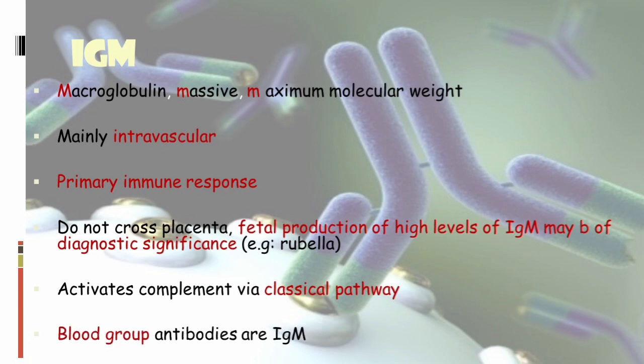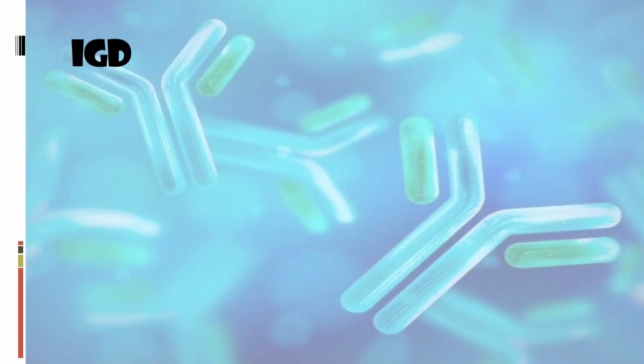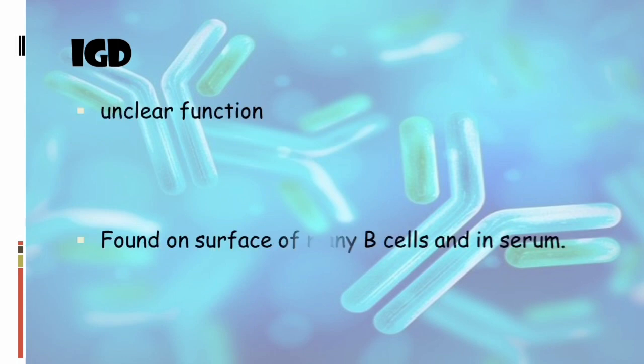Blood group antibodies are IgM. Next is IgD — its function is not entirely clear, and it is found on the surfaces of many B cells and also in serum.